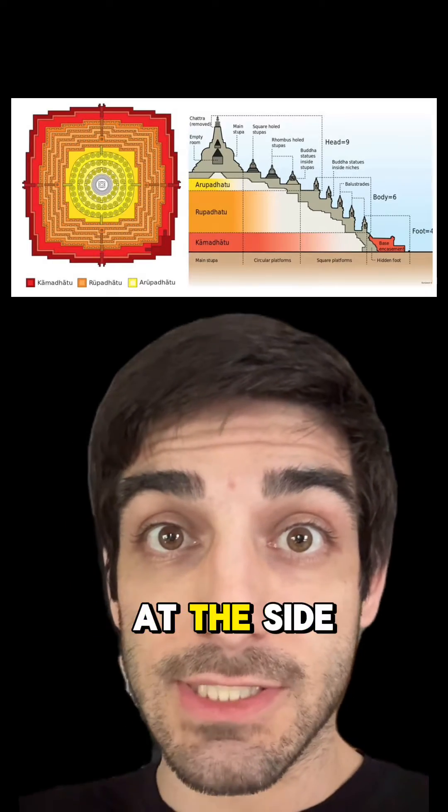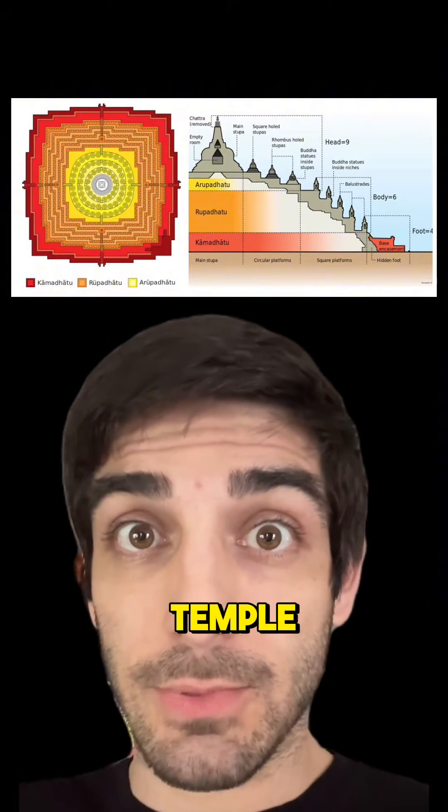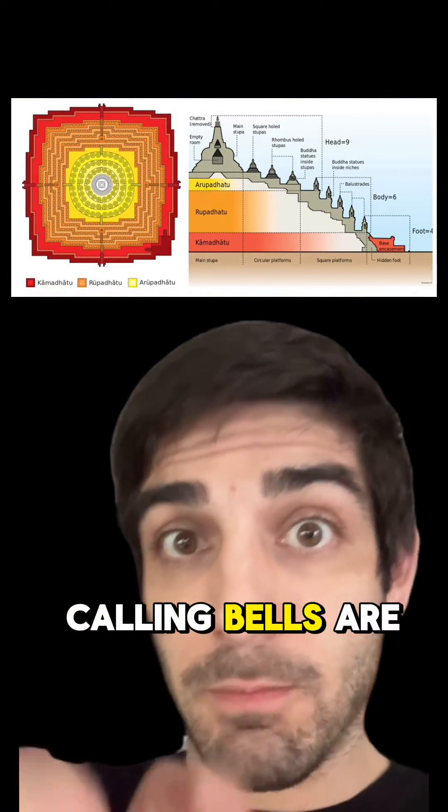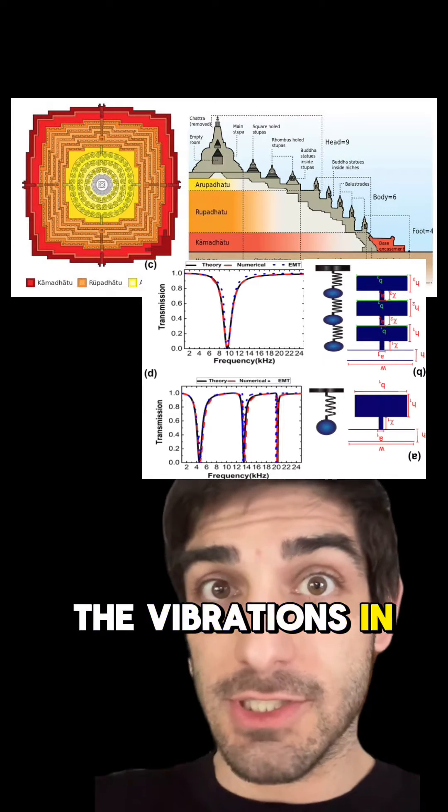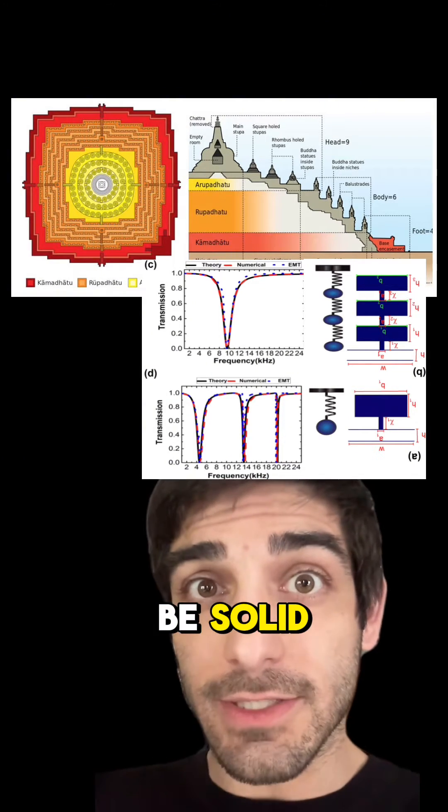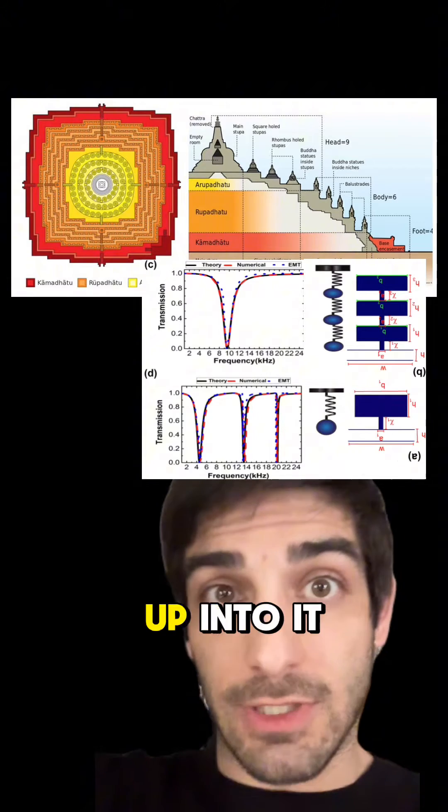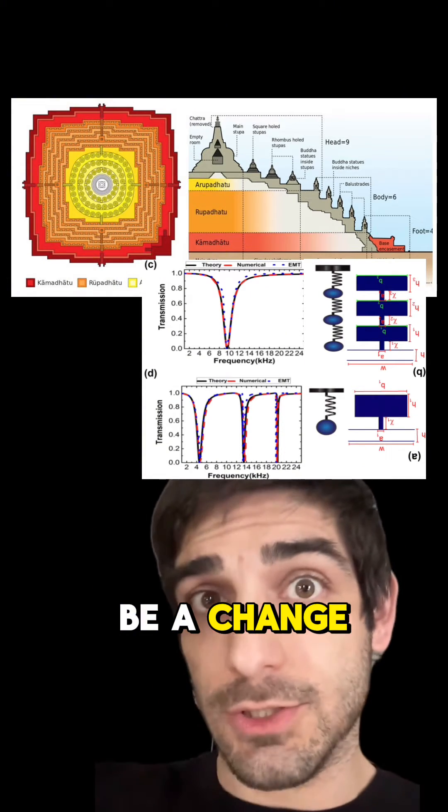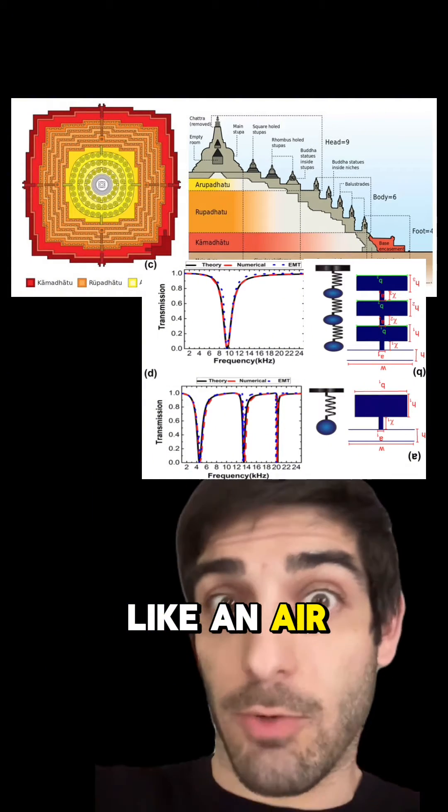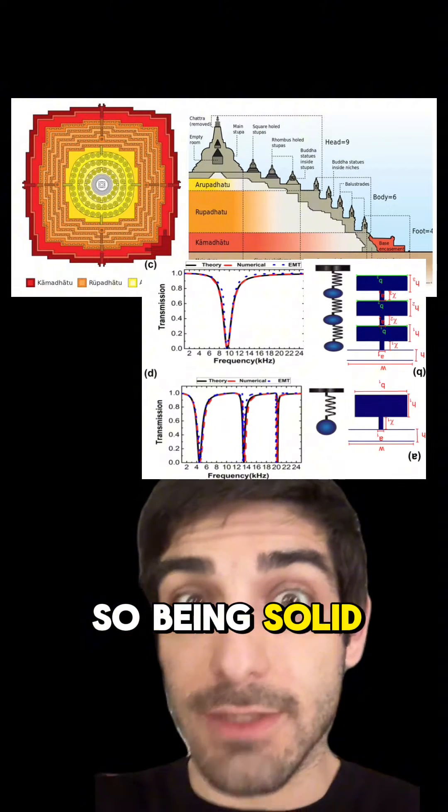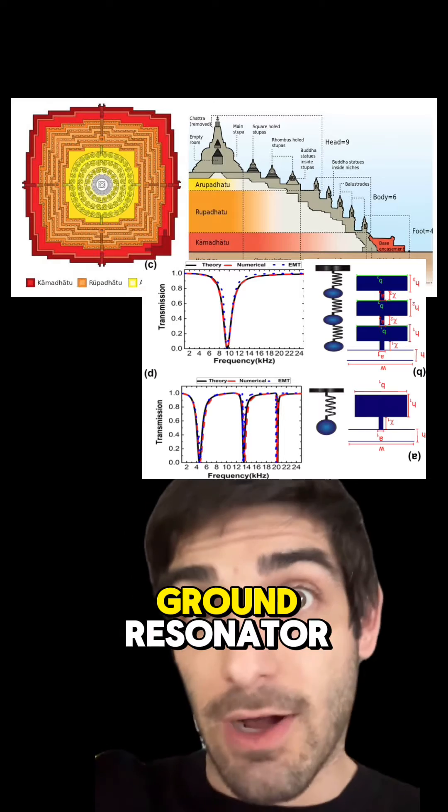And as you can see, when we look at the side profile of this temple, you can see all the what we were calling bells are actually Helmholtz resonators for all the vibrations in the ground. And that's why they're not empty. They have to be solid because the ground vibrations will travel up into it if it's solid and there won't be a change in index of refraction as it goes from one medium into an air pocket. So it being solid makes it a part of the ground resonator.